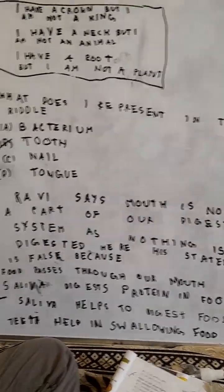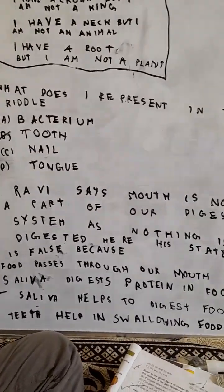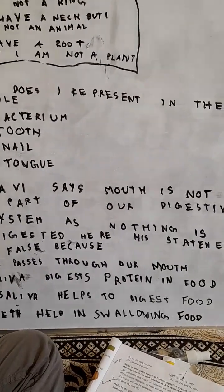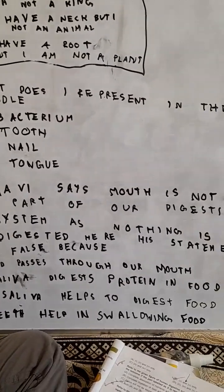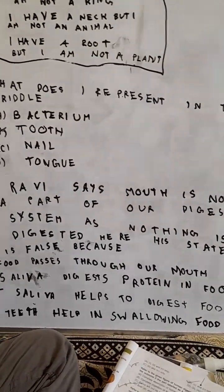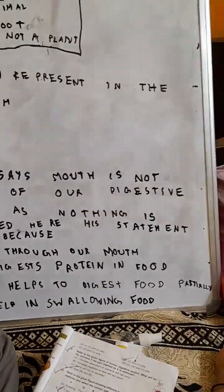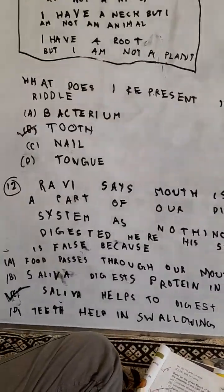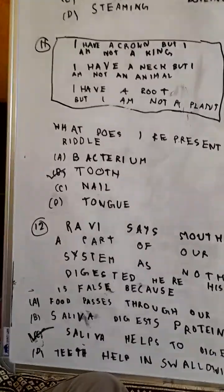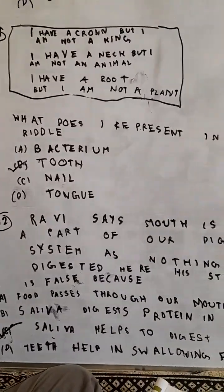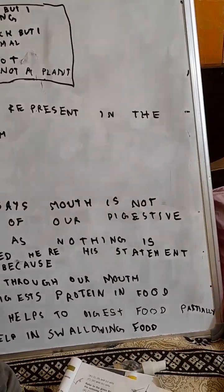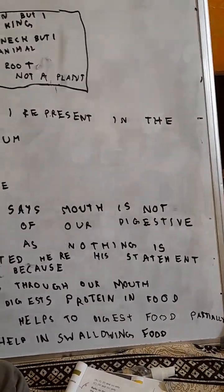Which statement is false? Food passes through our mouth — false. Saliva digests protein in food — this is incorrect. Saliva helps to digest food partially — this is correct. Teeth help in swallowing food. The correct answer is option C: saliva helps to digest food partially.